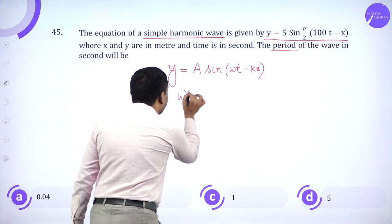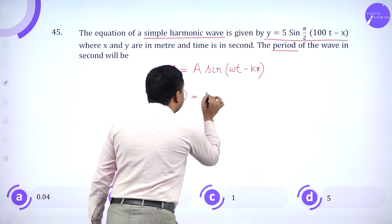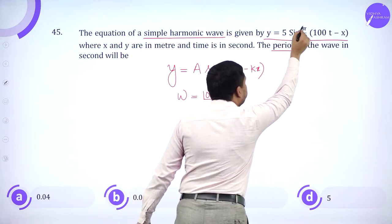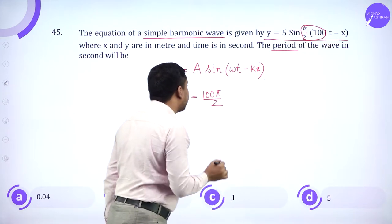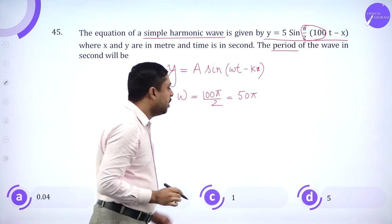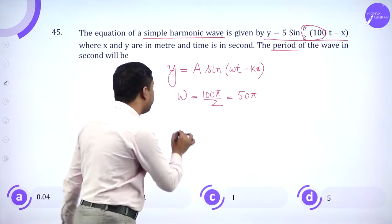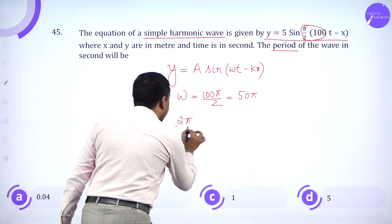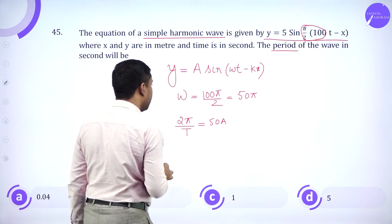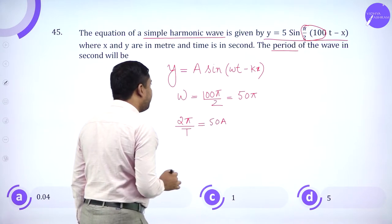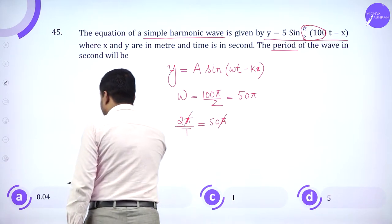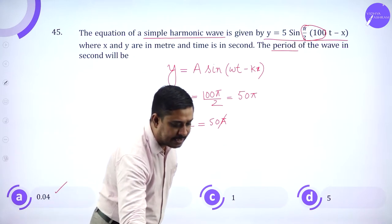From this I can extract the time period. When you compare, omega is 100 pi by 2, which is 50 pi. Omega equals 2 pi over capital T equals 50 pi, so T has to be calculated. On simplification, 0.04 should be the answer.